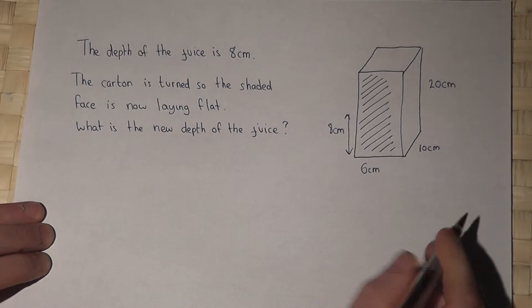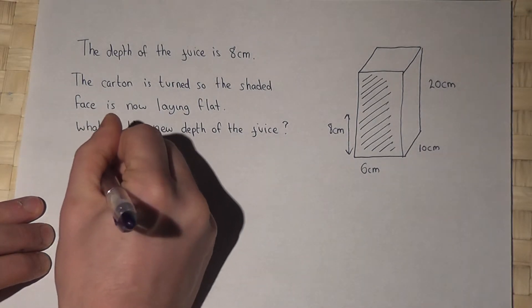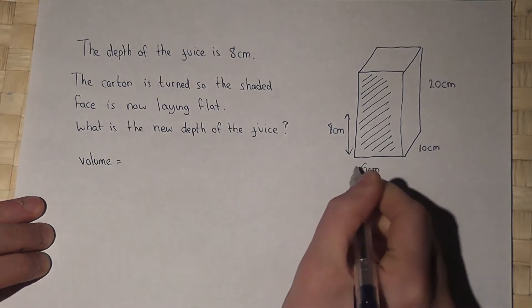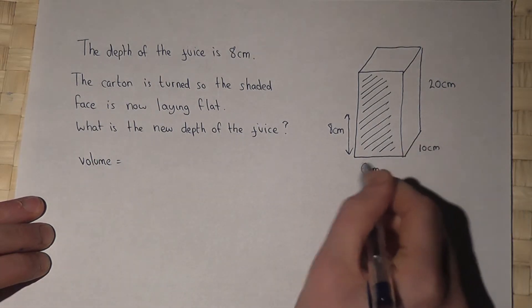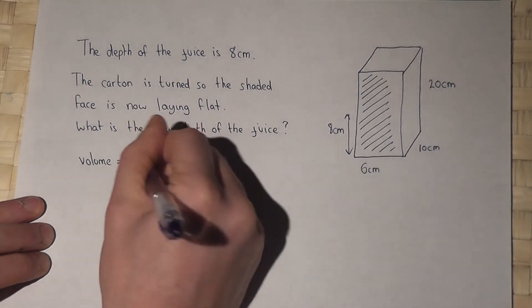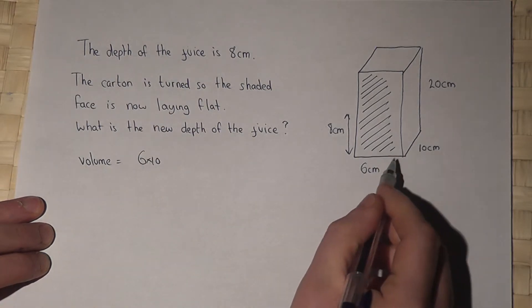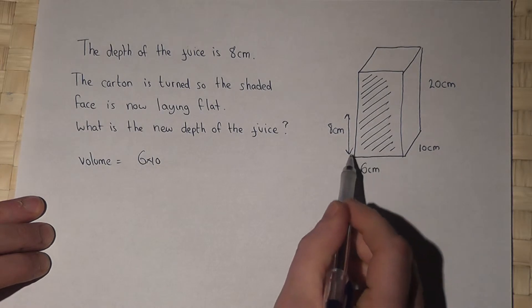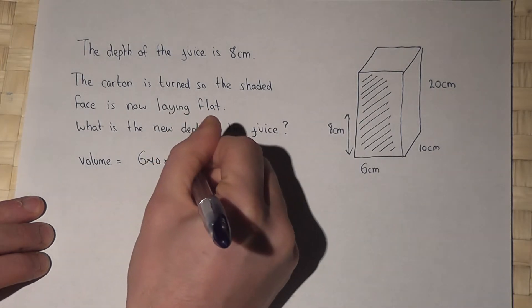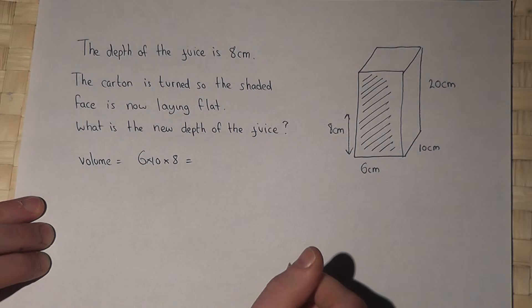So the volume of juice in that carton must equal 6 times 10, which is the area of the bottom of the carton, times by 8, which is the depth of the juice in the carton.